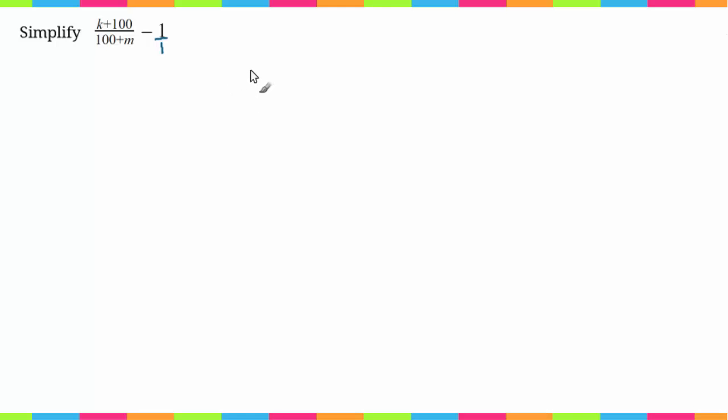So the first thing I'm gonna do is do that. In order to get a common denominator in this case, it's actually really easy because over here we have 1. So the only thing we can really do is turn this 1 into a 100 plus m.